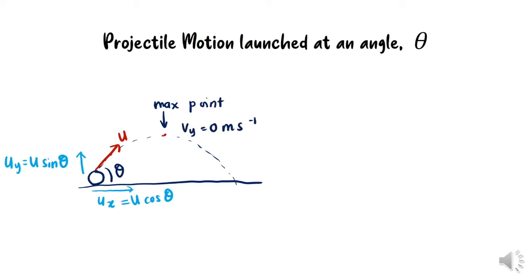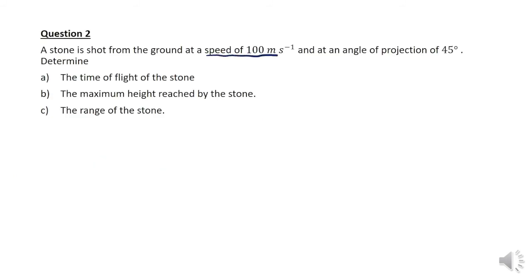The maximum height the object can reach is at the maximum point, where vy must equal zero meters per second. The height from the maximum point to the ground is labeled h, and the horizontal distance from the starting point to where the object hits the ground is sx. Now let's move to question two, applying projectile motion at an angle theta of 45 degrees with initial speed 100 meters per second.